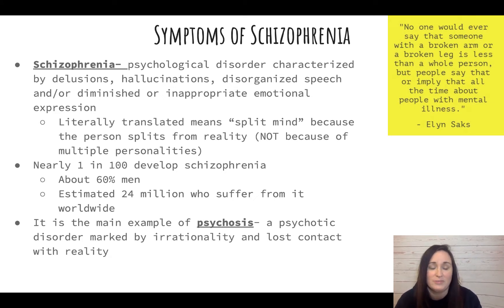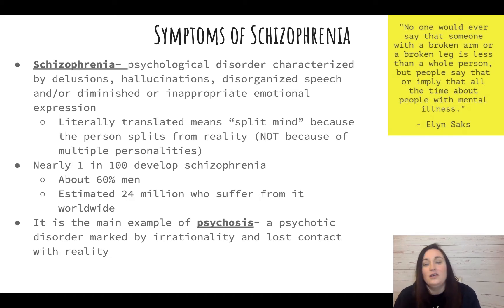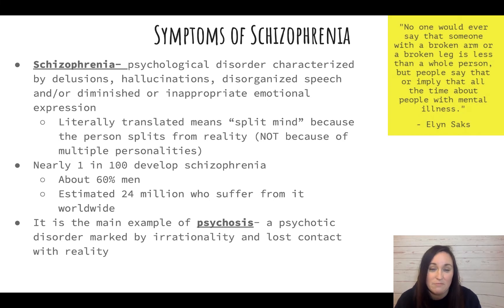We're going to talk about all the possible symptoms and what they mean. Literally translated, schizophrenia means 'split mind' because the person is split from reality — not in the idea of multiple personalities, but just a break from reality, a psychosis. Nearly one in 100 people develop schizophrenia, and about 60% of those are men. It is estimated that 24 million suffer from it worldwide.